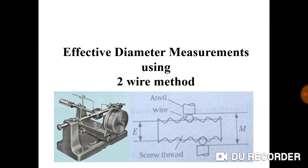The diagram shows a floating carriage micrometer which is used for measurement in the two-wire method, where the screw thread is mounted between the centers and the fiducial indicator and micrometer head are mounted normal to the axis of the screw thread. Between these, wires or best size wires are used.